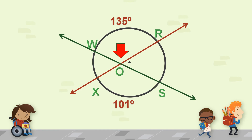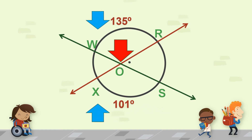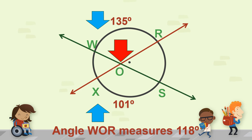For this example, we are going to solve for angle WOR. The arc behind angle WOR is 135 degrees, and the arc in front — arc XS — is 101 degrees. All we need to do is get the sum by adding these two arcs: 135 degrees plus 101 degrees, then divide by 2. The measure of angle WOR is 118 degrees. Now, if you are asked for the measure of angle SOX, that is the opposite angle of WOR, so they have the same measure — opposite angles are congruent.